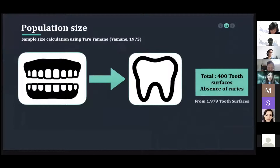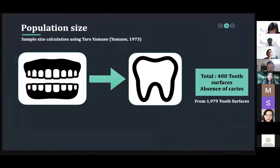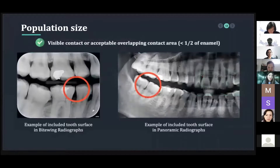The sample were calculated by using the Taro Yamane formula with a 95 percent confidence level. The co-decision of two observers with 25 years of experience in oral diagnosis and radiology randomly chose 400 non-carious surfaces from 1,979 surfaces of digital bitewing radiograph from the oral radiology department at the College of Dental Medicine, Rangsit University.